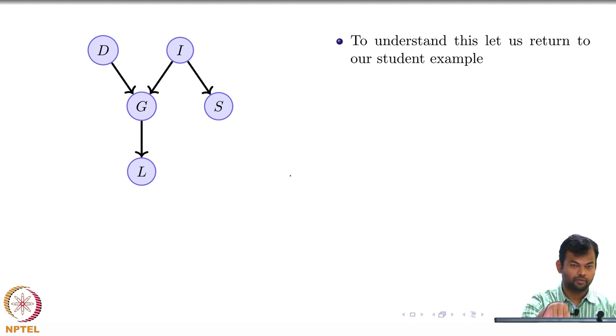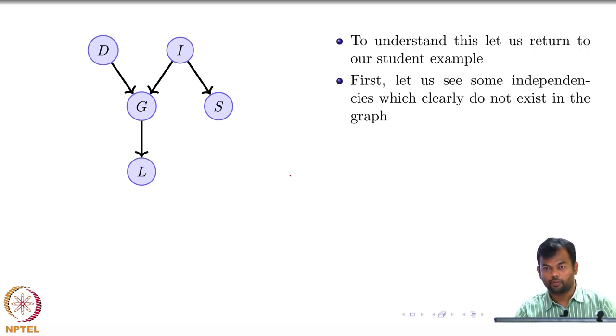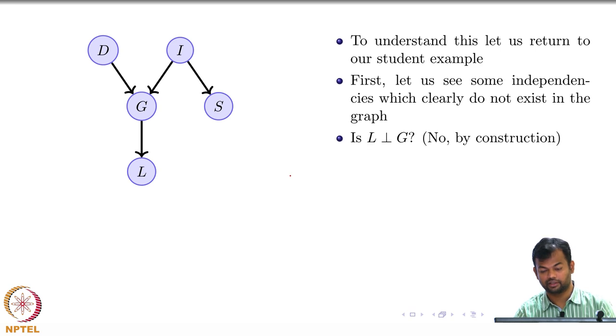So this is what we will return to, our student example. Now, let us look at some very simple independence assumptions that we have made here, or rather, let us look at the ones which do not exist here. Which are the independencies which do not exist in this network by design? G is not independent of I and D, S is not independent of I, L is not independent of G, right?